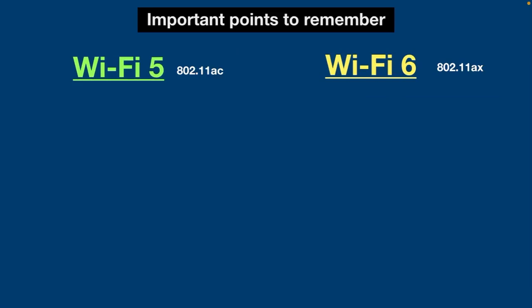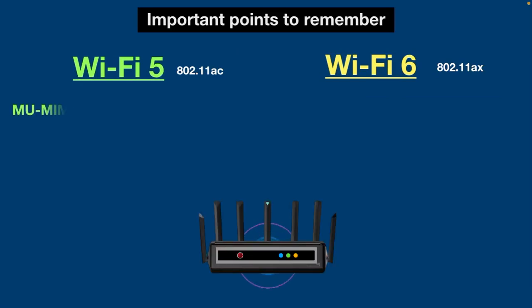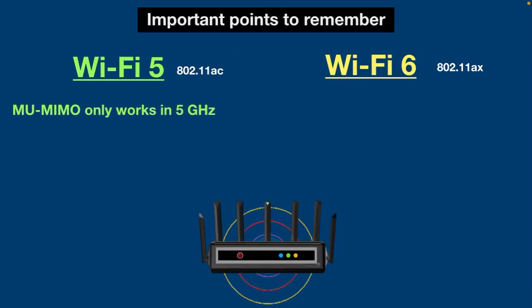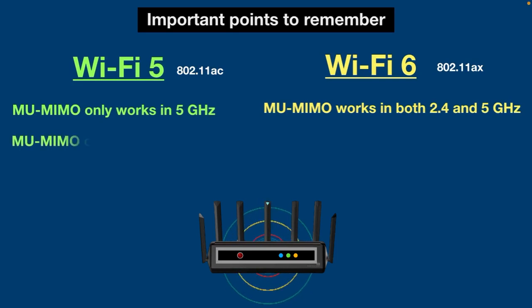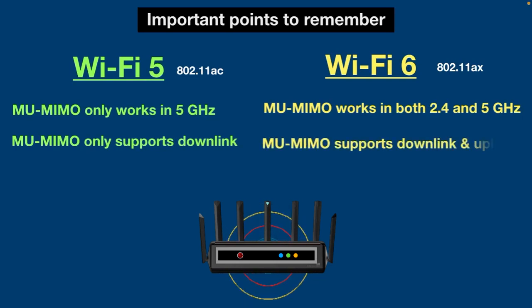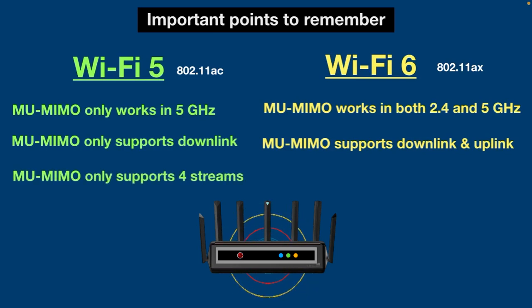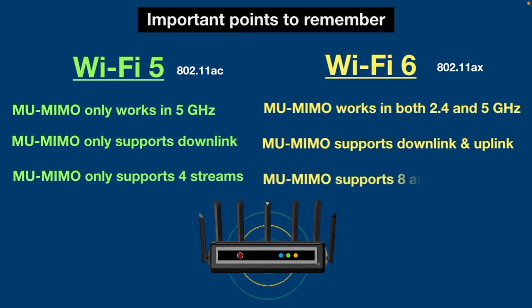Here are some important points to remember. Multi-User MIMO only works in the 5 GHz band for Wi-Fi 5; however, Wi-Fi 6 introduced Multi-User MIMO for the 2.4 GHz band as well. Multi-User MIMO only supports downlink — not uplink — in Wi-Fi 5; however, Wi-Fi 6 supports both. Multi-User MIMO only supports four simultaneous streams in Wi-Fi 5; however, in Wi-Fi 6 it supports 8 and even 12 streams.